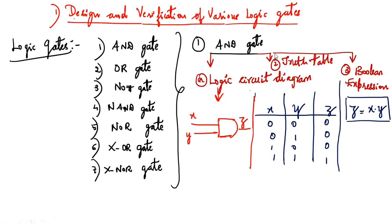The AND gate has three parts: the first is the logic circuit diagram, the second is the truth table, and the third is the Boolean expression. This is the symbol of the AND gate — it has two inputs, X and Y, and one output.